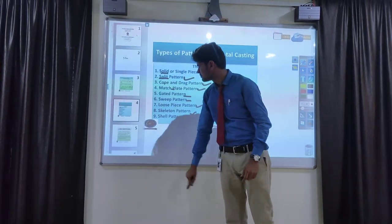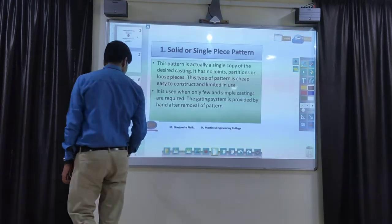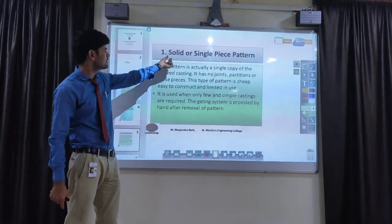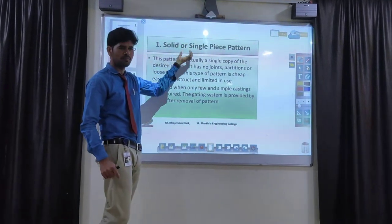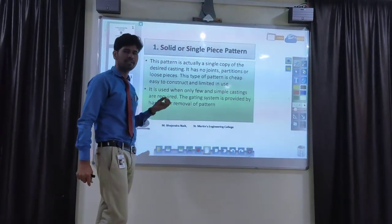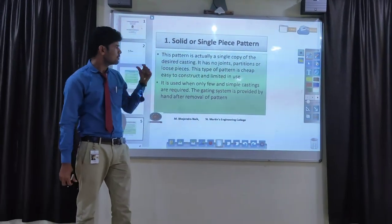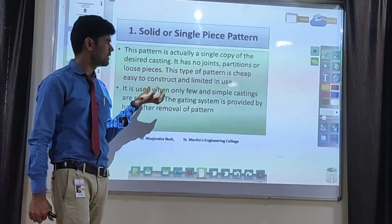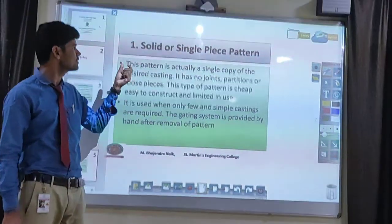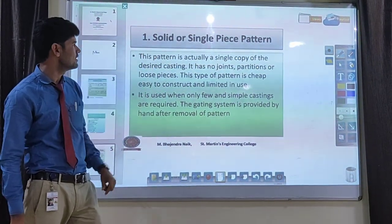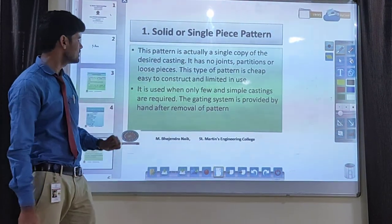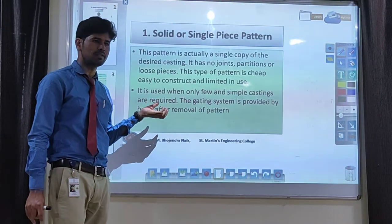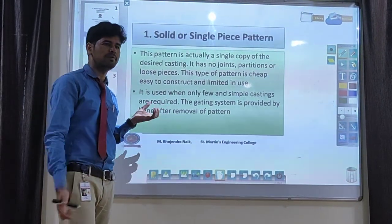The first pattern is the solid pattern or single piece pattern. The name itself says it — solid or single. A single piece means the object should be there without any joints. It is kept either in the drag box or the cope box. It is a very simple entity. It is called a solid piece pattern or single piece pattern, and it is applicable only for certain kinds of castings.